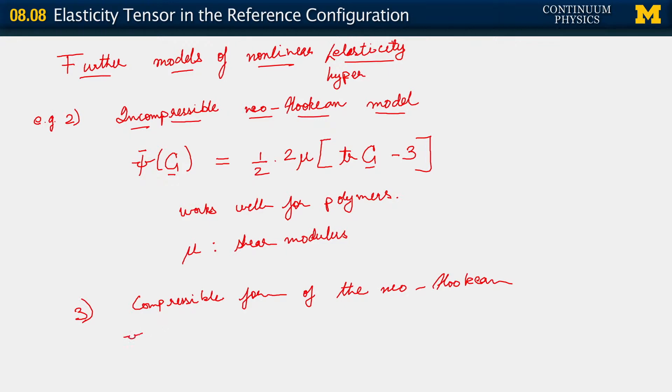And that form is the following. Psi hat, also written as a function of C, is one-fourth lambda. Now, this is our other Lamé parameter coming back. So we have one-fourth lambda, we have here the determinant of C minus one, minus one-half lambda over 2 plus mu, natural log of determinant of C, plus the term coming from the incompressible Neohookian, which is mu trace C minus three.